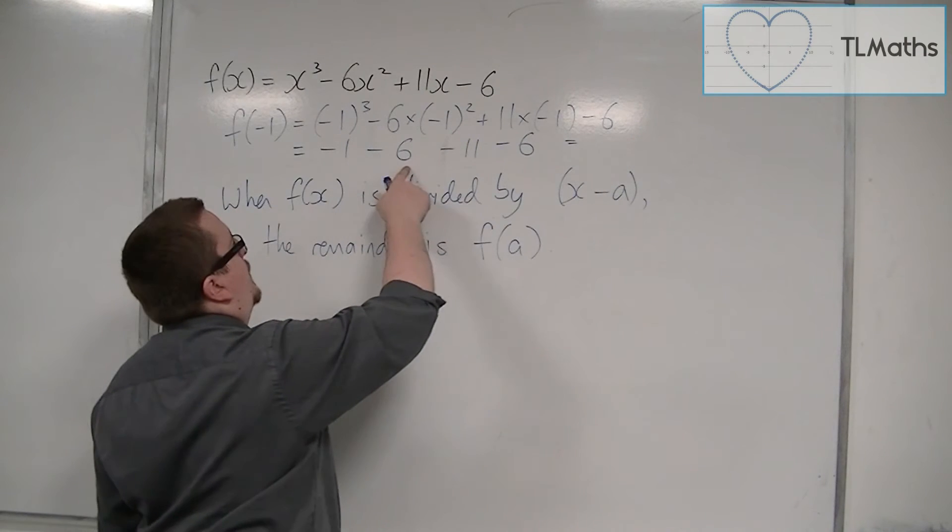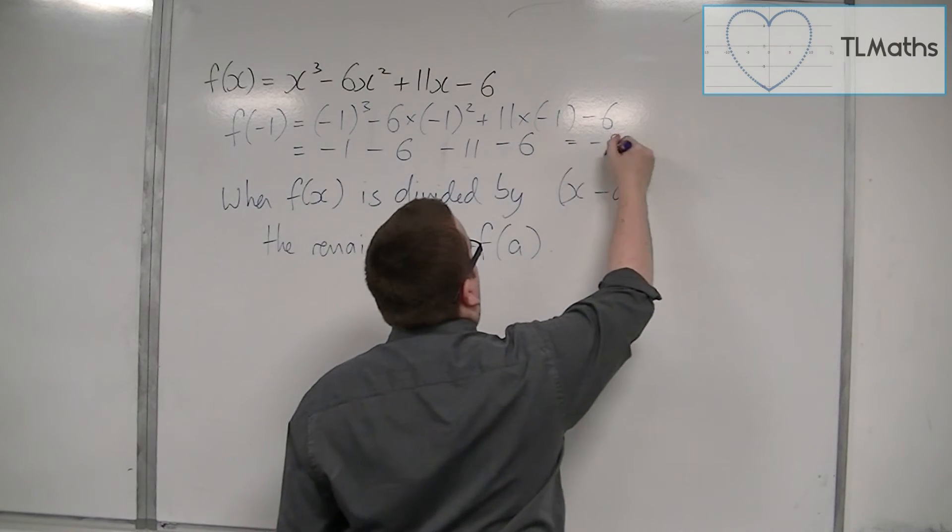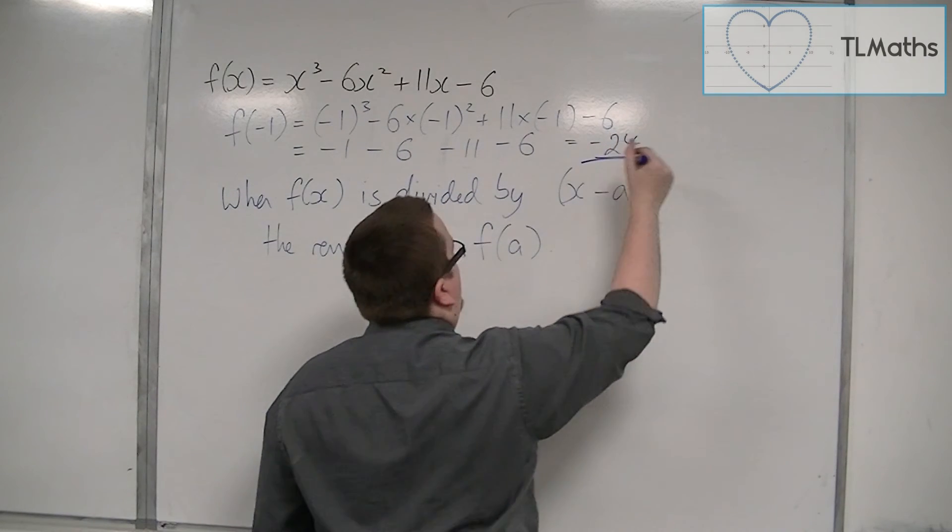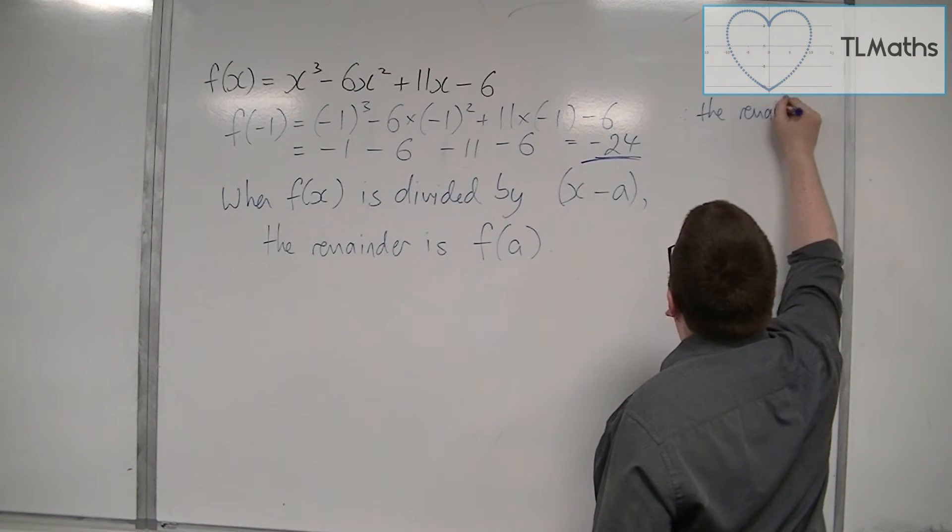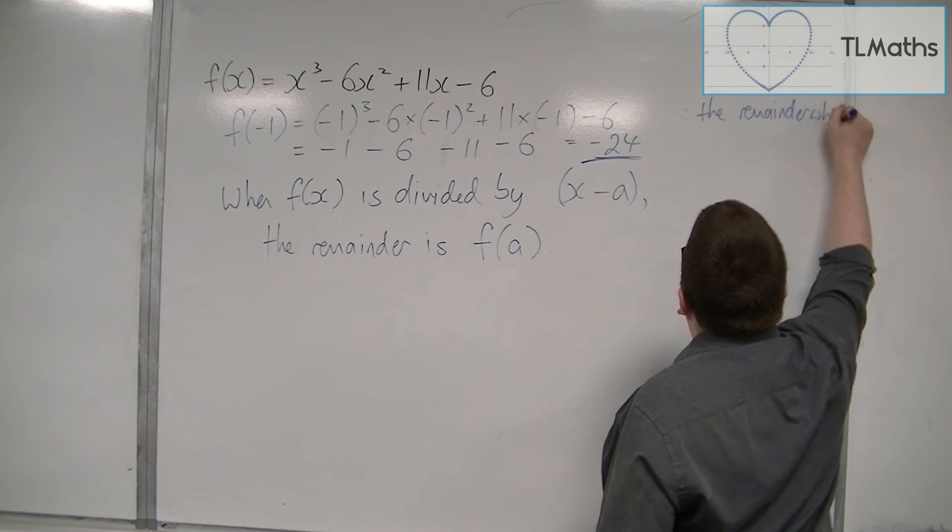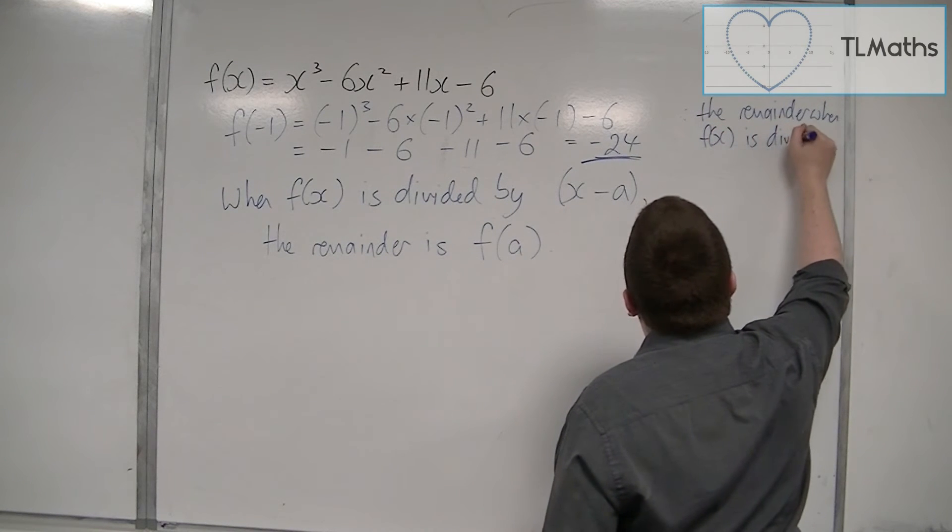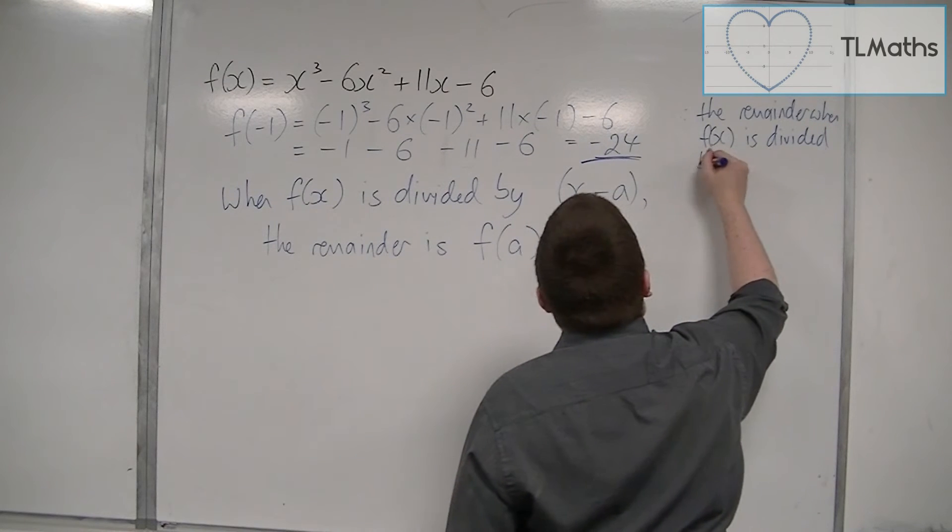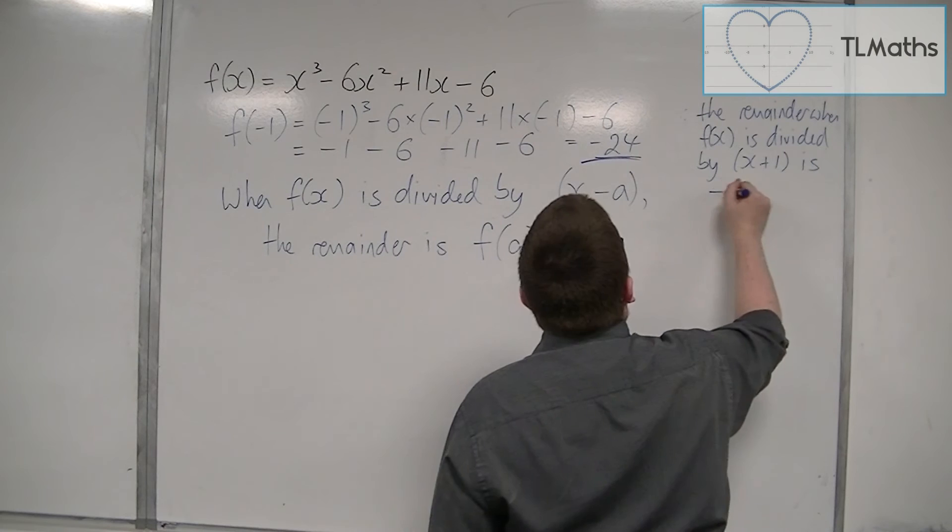So we've got -1 - 6 = -7, then -18, so we've got -24. Therefore, the remainder when f(x) is divided by (x+1) is -24.